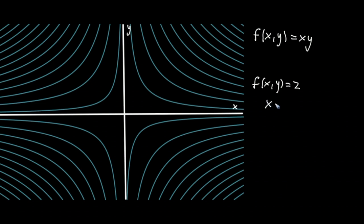And a way you could think about that for this specific function is you're saying, when is x times y equal to 2? And that's kind of like the graph y equals 2 over x. And that's where you would see something like this. So all of these lines, they're representing constant values for the function.